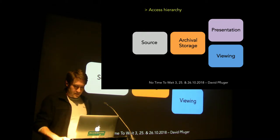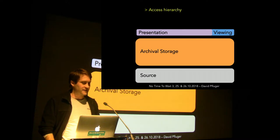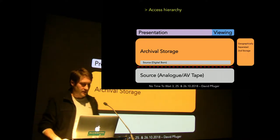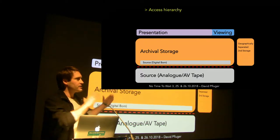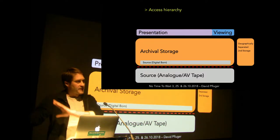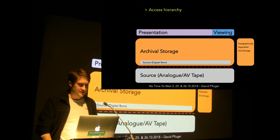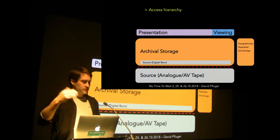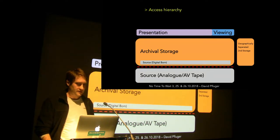Looking at an access hierarchy, we put those elements in a different structure relative to each other, with different layers within this hierarchy of access to those different files. There is kind of a physical difference between the area where you keep the analog or tape formats compared to where you keep the digital files. You don't want your vinegar films lying next to your digital archive breathing in all the acetic acid. The only exception are the digital-born files, which will also go within the digital archival storage. At the same time, you will need your geographically separated second storage site.